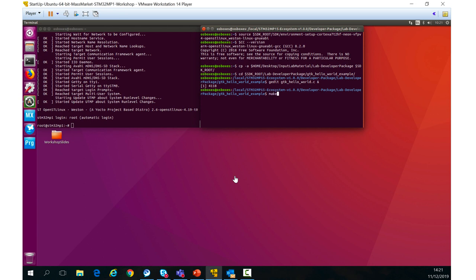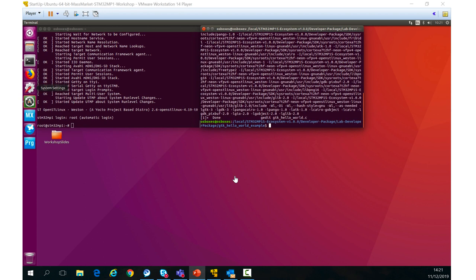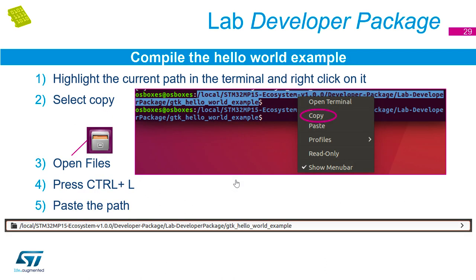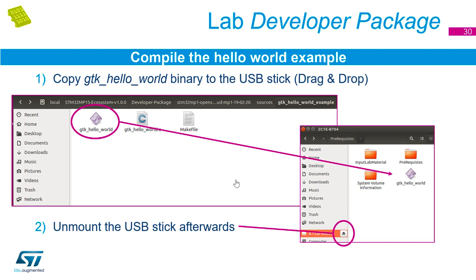Now we need to make the project, so type 'make' and hit Enter. It will go off and build using the GCC compiler we've configured and generate our binary file. Now we want to transfer that binary file to our target board using a USB stick. You can highlight the current path in your terminal window and copy it, then press Ctrl+L in the file manager and paste the path to navigate to the binary file, then drag and drop the binary file onto your memory stick.